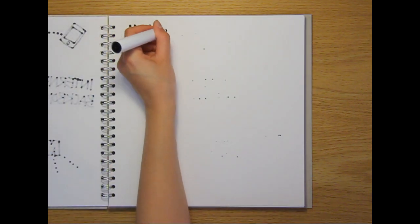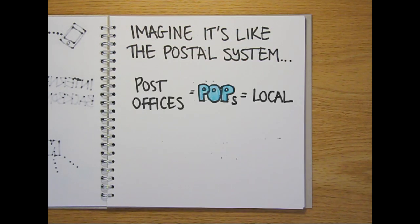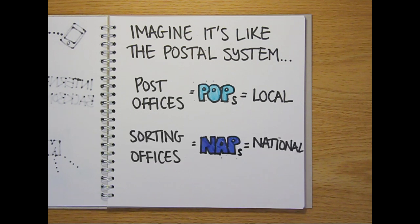These different entities can be compared to post offices and sorting offices in the postal system. The post offices, POPs, are where local network traffic is collected, while the sorting offices, NAPs, are where the national network traffic is sorted.